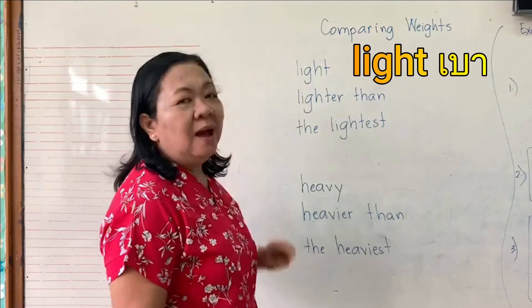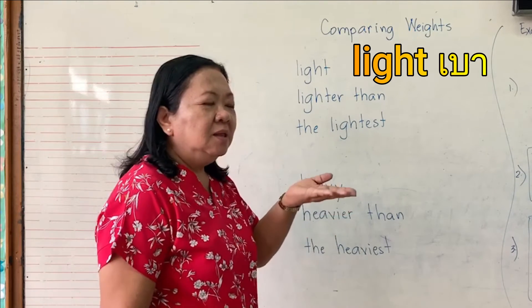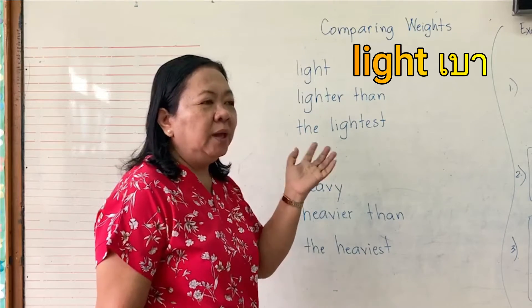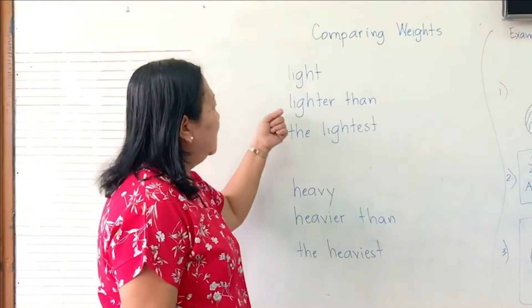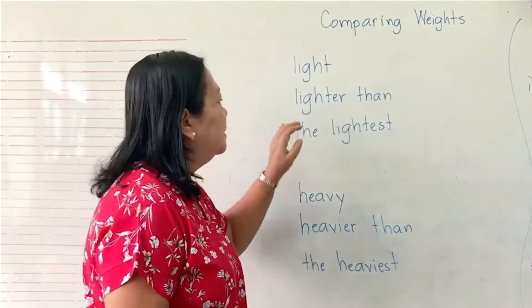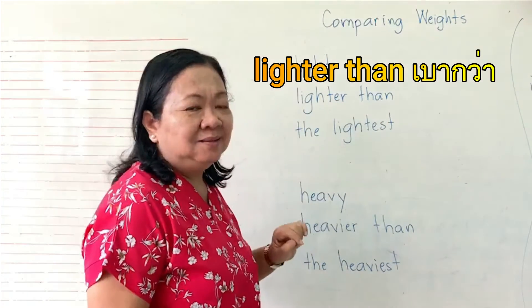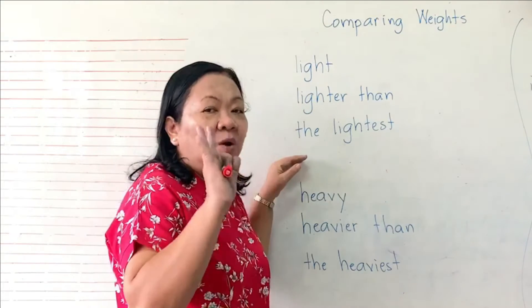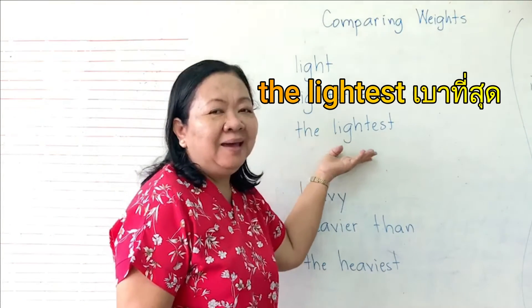First is the word 'light.' It means something is small, and the weight is just grams. If we are talking about two light things, we will use 'lighter than.' And if we are talking about three or more things, we will use 'the lightest.'